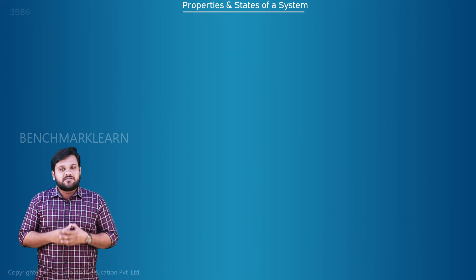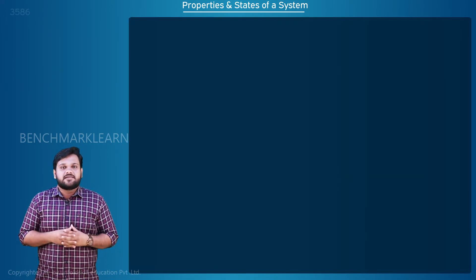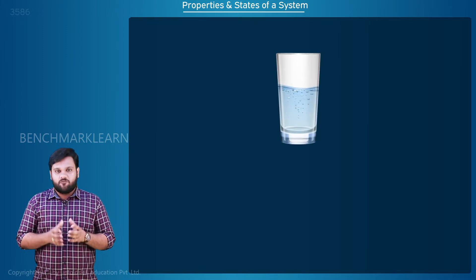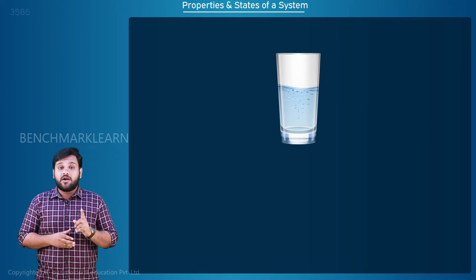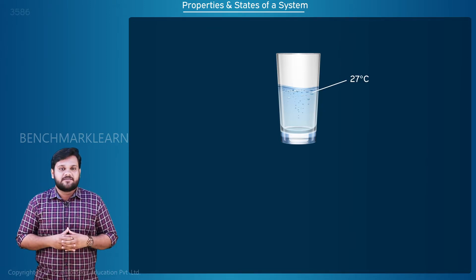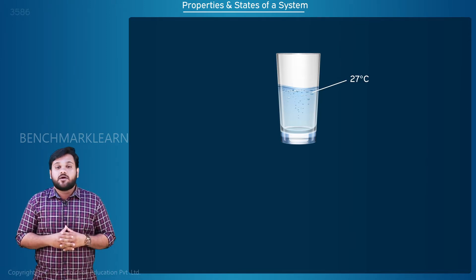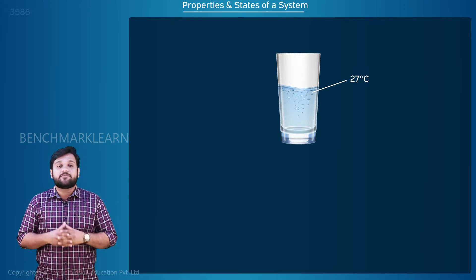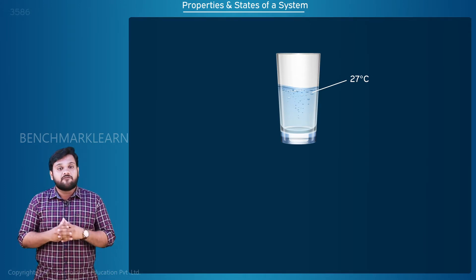Properties and states of a system. Consider a glass of water. The water has a volume of 1 liter and also temperature of 27 degrees Celsius. So we can say that water is in a state which is explained by the properties of temperature and volume.